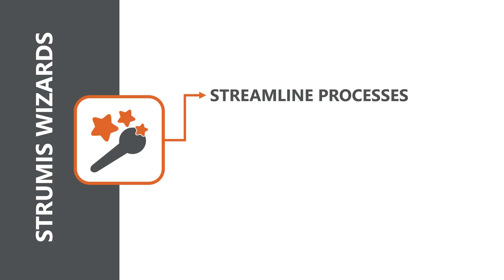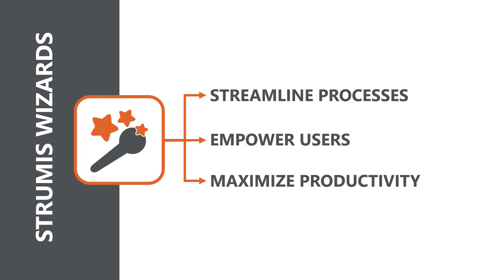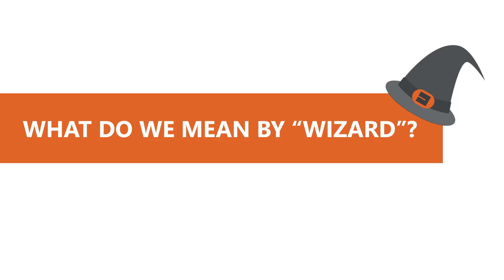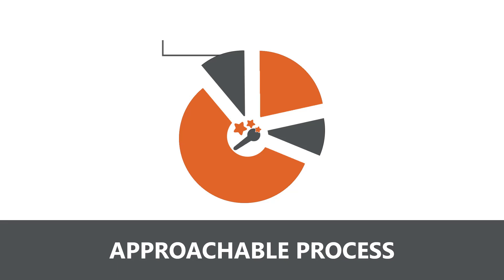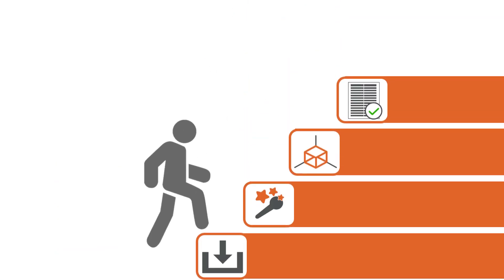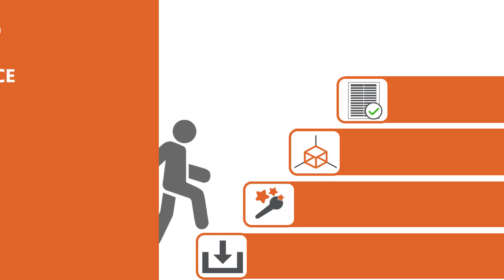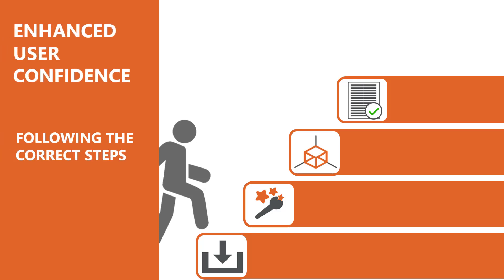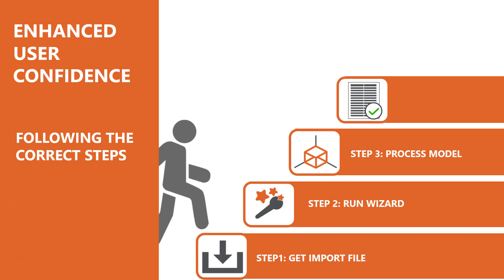On top of all of those features, Strumis also uses wizards throughout the system. These are powerful tools that streamline processes, empower users, and maximize productivity. So, what exactly do we mean when we use the term wizard in the context of software? Software wizards break down complex tasks into a series of simple and manageable steps, making software more approachable for users, even those with limited technical expertise. Users feel more confident when using software with wizards, as they receive reassurance along the way that they are following the correct steps.